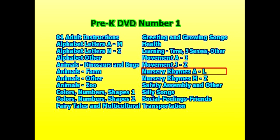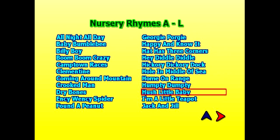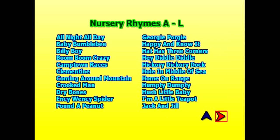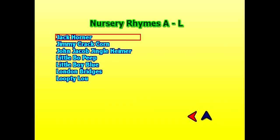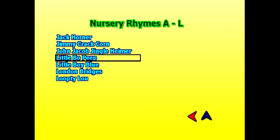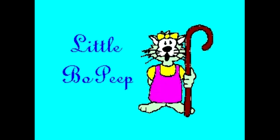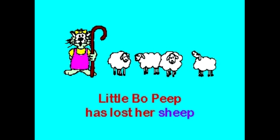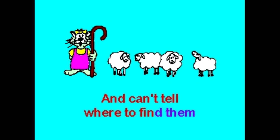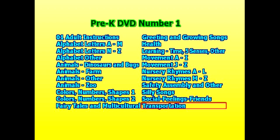Movement J to Z. Nursery Rhymes — there are a lot of nursery rhymes, so it does have the red arrows. Scroll down to the red arrow if you want to see all the other songs listed in Nursery Rhymes A to L. Click on that red arrow. Maybe somebody wants to hear Little Bo Peep — click on Little Bo Peep and it will begin to play. These all have scrolling lyrics, which makes it very nice for the early reading connection. 'Little Bo Peep has lost her sheep and can't tell where to find them.' Click on the menu button and go back to the main menu.